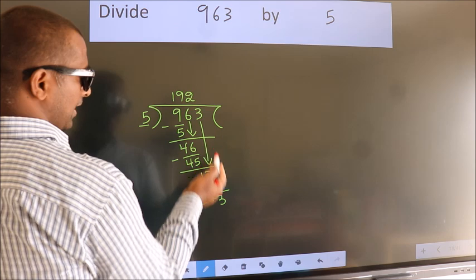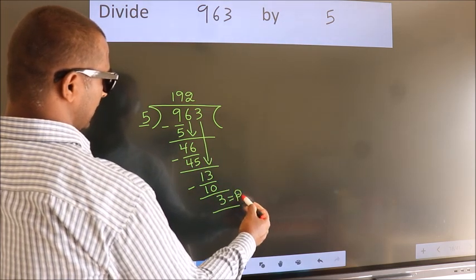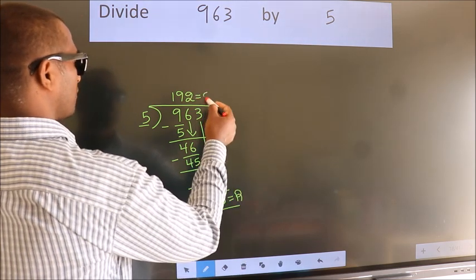No more numbers to bring it down. So we stop here. This is our remainder. This is our quotient.